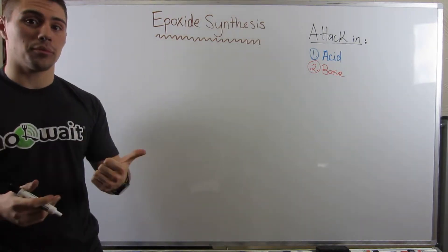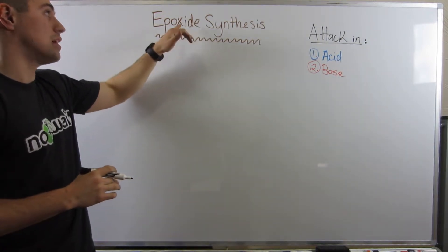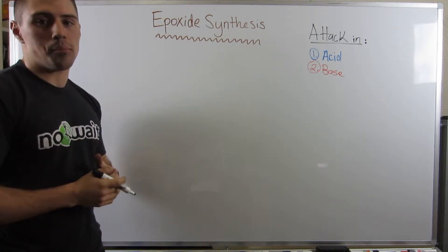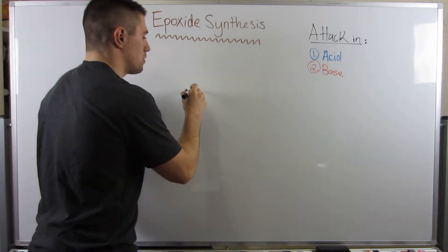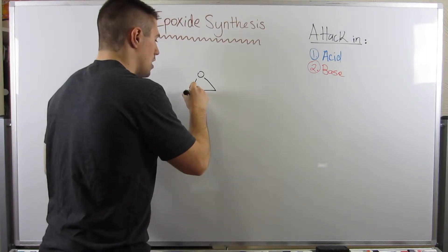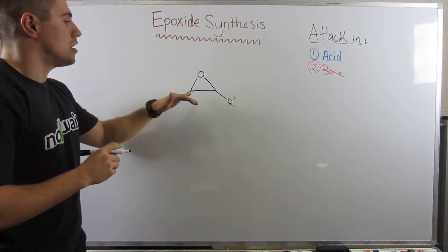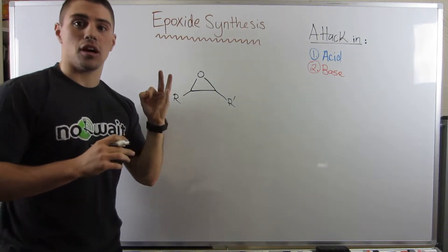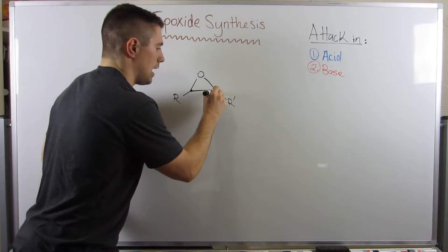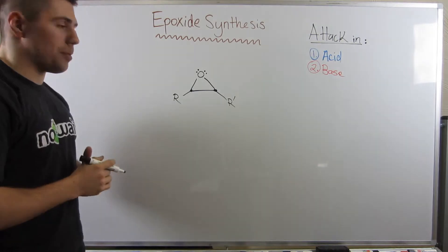Alright gang, now that we've talked about rearrangements and how to make ethers, the last video in this series is going to talk about how we make a functional group called epoxides. Here's what an epoxide is - I'm going to draw you the generic functional group, because this is something that's new to us. You're going to have a little three-atom cyclic ether: two carbons, both bonded to the same oxygen. This is what an epoxide is.